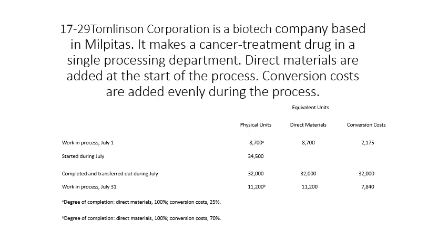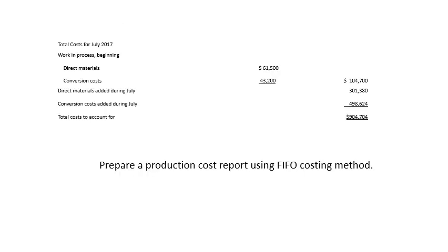As already explained, exercise 1729 is first applied using the weighted average method, and then using first-in, first-out without transferred-in cost. Here I am only asking to prepare the production cost report using FIFO, because I have already solved the weighted average costing method. If you have not solved it, try to solve it once using weighted average and once using FIFO. This is for the first department, which has no transferred-in cost.